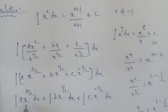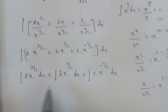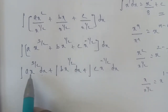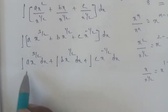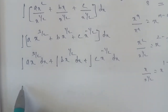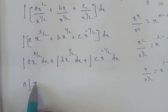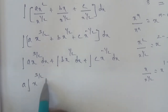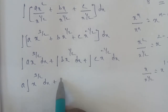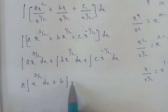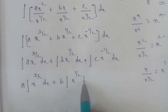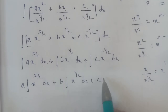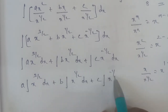Now each and every term is in the format x power of n. The constant is removed outside: A times integral of x power of 3 by 2 dx, plus b times integral of x power of 1 by 2 dx, plus c times integral of x power of minus 1 by 2 dx.